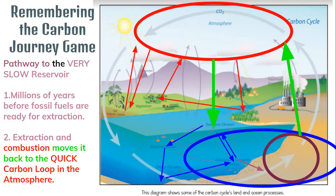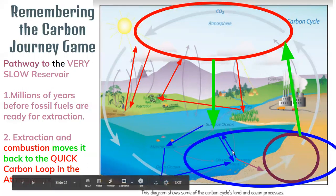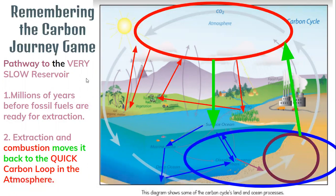We just talked about the pathway to that very slow reservoir, which can take millions of years for sediment burial to cause those changes into fossil fuels. It will take a long time for them to be ready for extraction to go back into the atmosphere. The real issue is that humans are relying too much on this reservoir for energy. Humans are largely responsible for how much carbon dioxide gets put into the atmosphere. That puts it back into the quick carbon loop, meaning carbon remains in the atmosphere for longer periods of time rather than working its way back down into the very slow part of the loop.